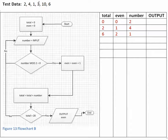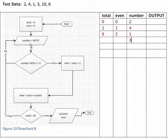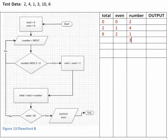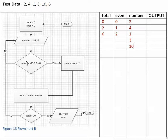The next number is 3. We take the value 3 and input it into number. We ask the question again: is number mod 2 equal to 0? No, it's not — there is a remainder of 1. So we come up this side and input the next number, which is 10. We ask: is 10 mod 2 equal to 0? It's an even number, so yes it is.